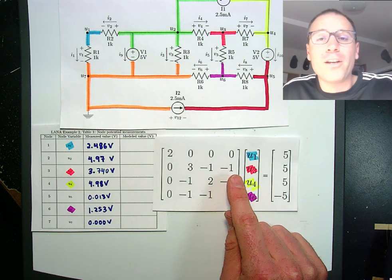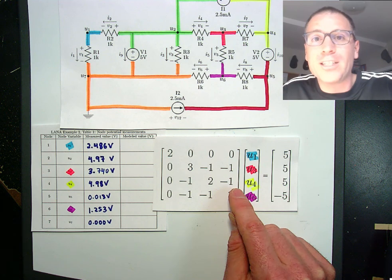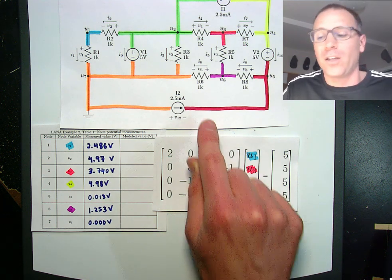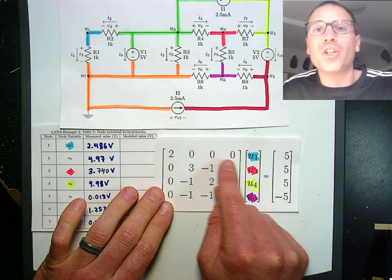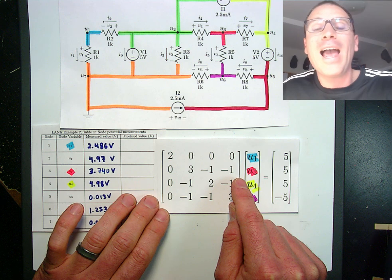We're going to make a claim in the linear algebraic nodal analysis algorithm that this matrix is non-singular. This matrix is the same matrix that would arise if I ran classical nodal analysis on this.